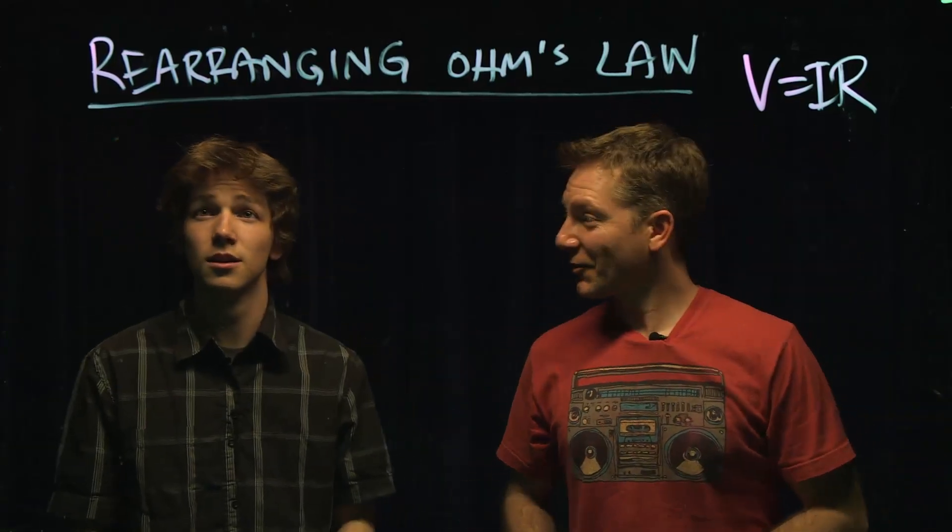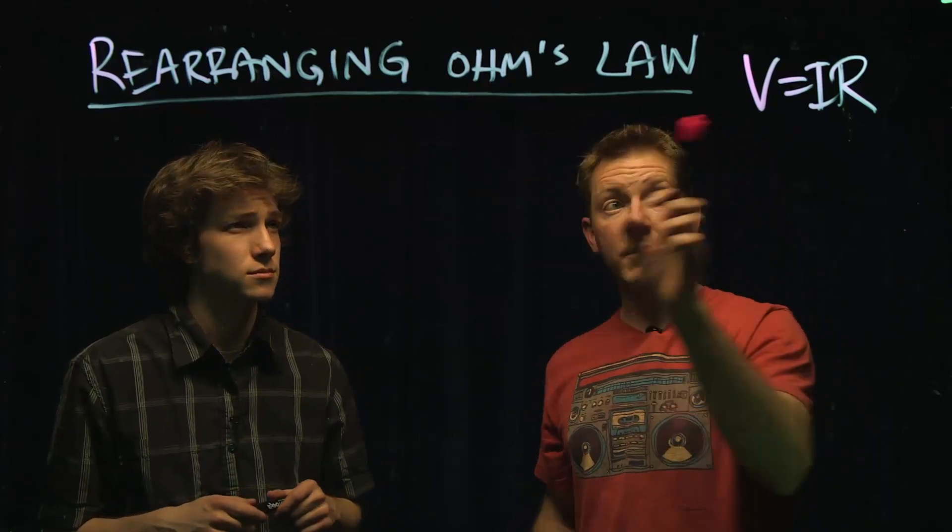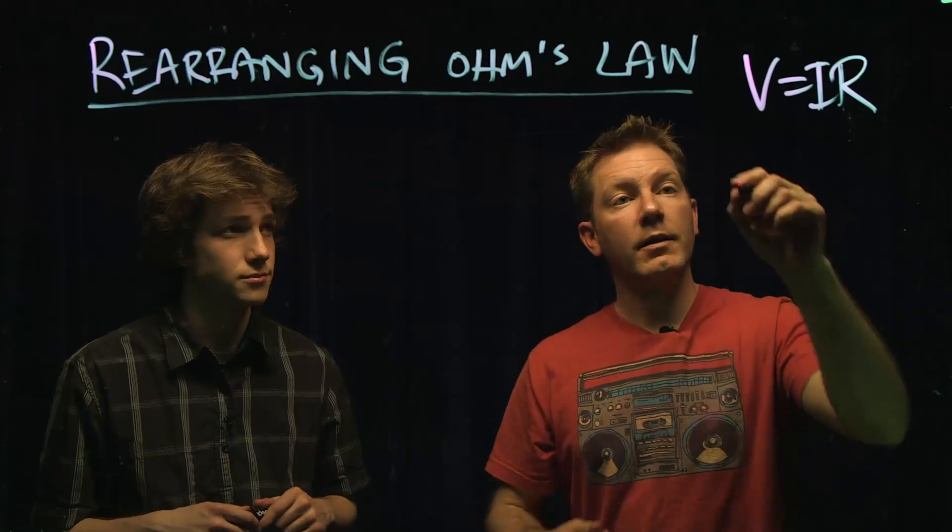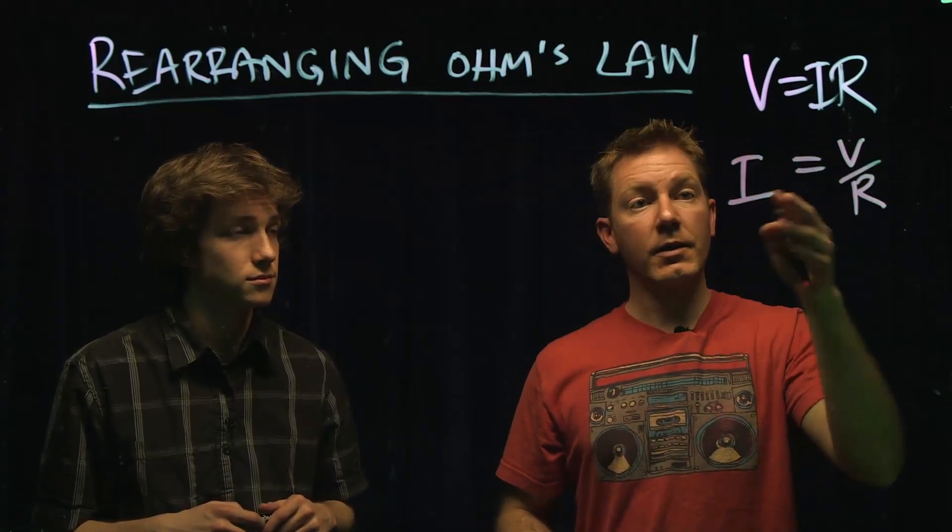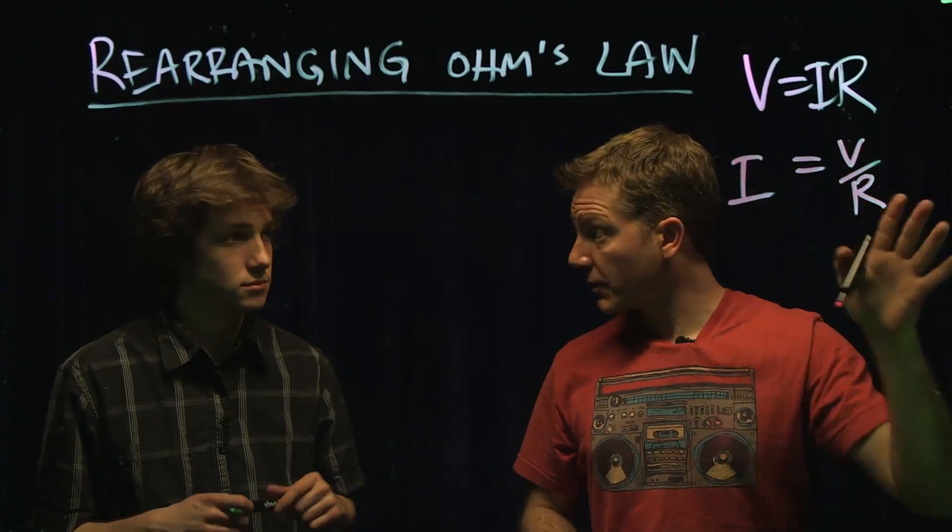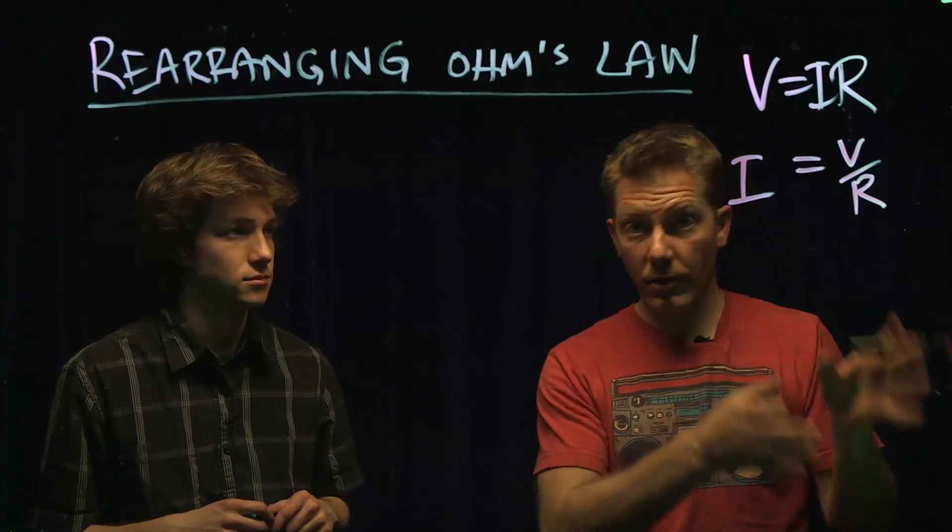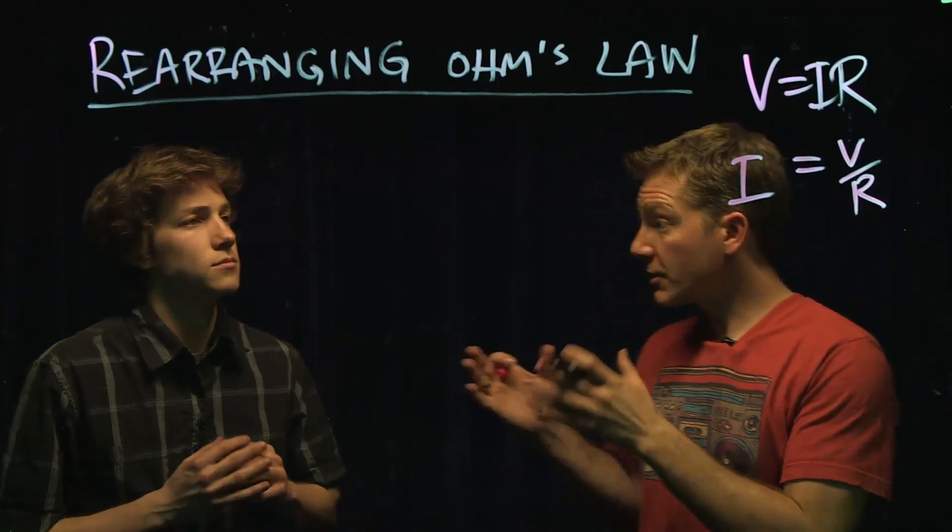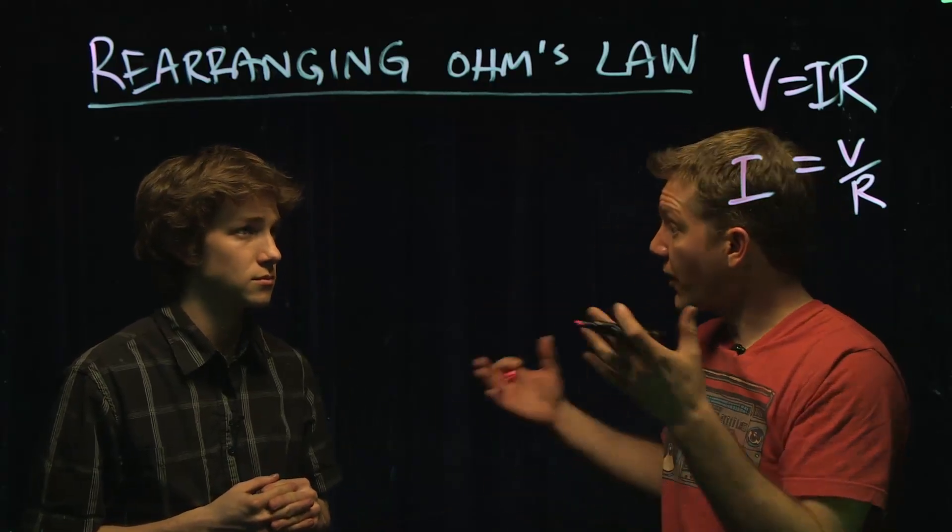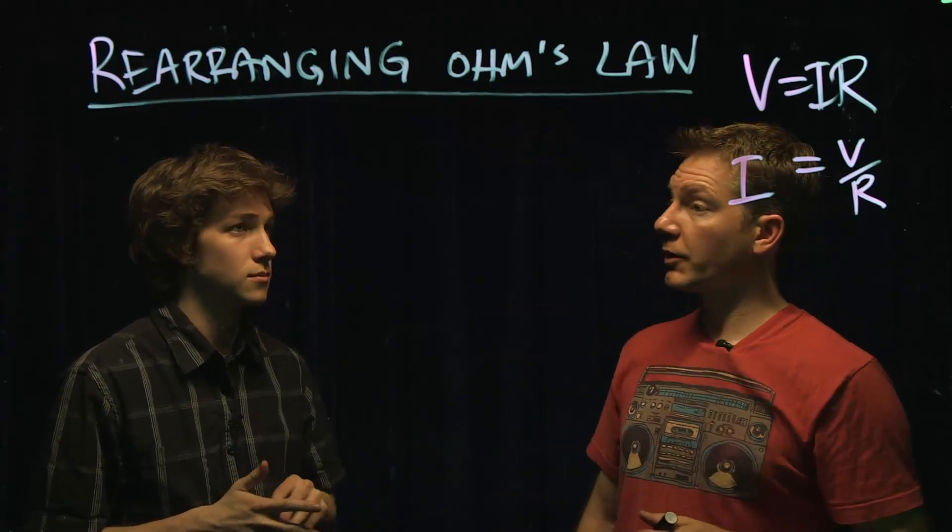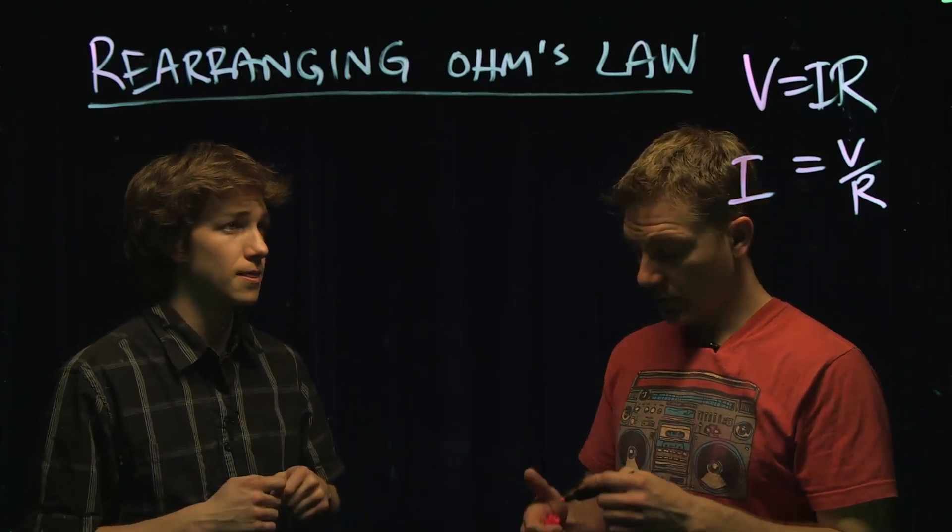Well, that was easy. So now we're doing, we just did current. We rearranged Ohm's law so that I was on one side. So if you need to know what current is and you know these two, we can do that. We did that already. So now we're going to do R. We're going to get R on one side so that if somebody stops you in the street and says, hey, the voltage is this, the current is this, find the resistance. So solving for R. That's what we're going to do. So go ahead.